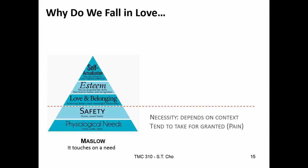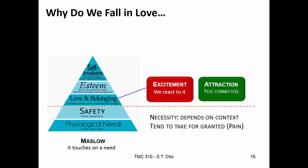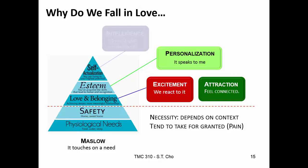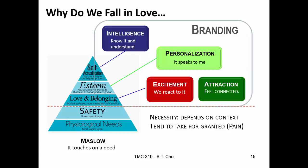Why do we fall in love? We could look at Maslow. Below the line of safety and physiological needs are necessities — we have a tendency to take these for granted, but those represent the pain. The reason why we fall in love is about belonging — we get excitement, we feel attraction. It affects our esteem; we want something personal and special, something that speaks to us. And in terms of self-actualization, the product can have intelligence — I know it and I understand it. This is what branding and positioning is about, and it's why we fall in love with products.